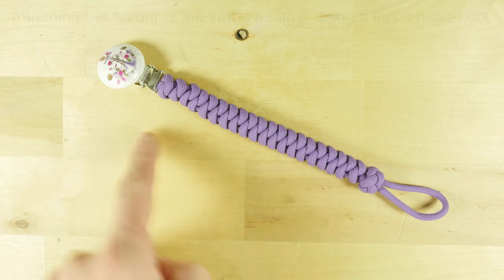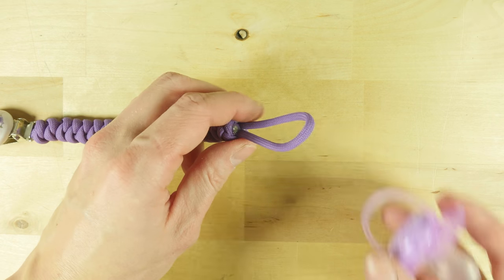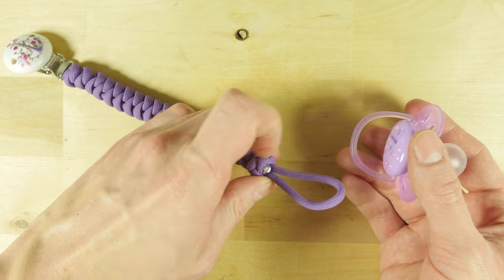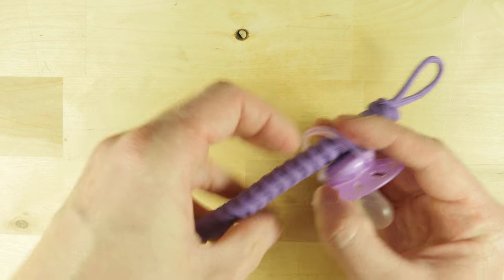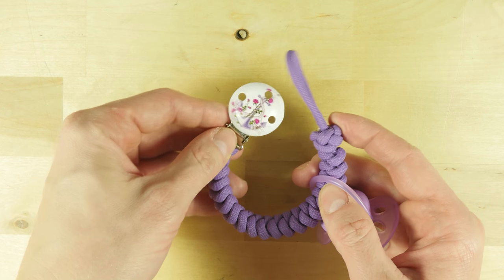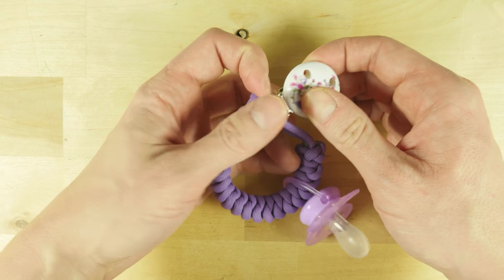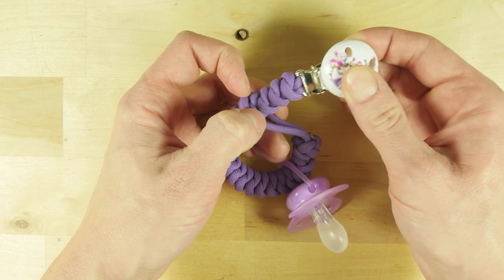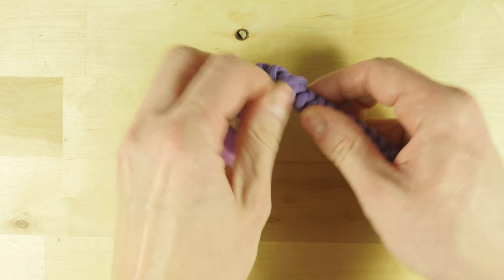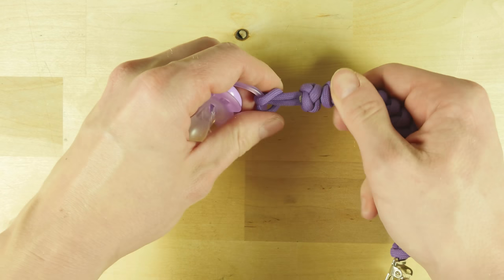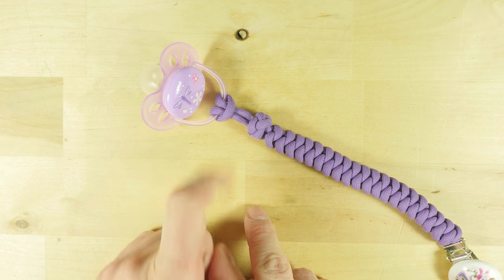Now to attach the pacifier holder onto a pacifier, we pick up the loop first and feed it through the handle of the pacifier. Then take the clip and feed it through the loop. Then pulling on the clip, we pull the entire body of the holder through the loop. And with this you have attached your pacifier holder onto the pacifier.